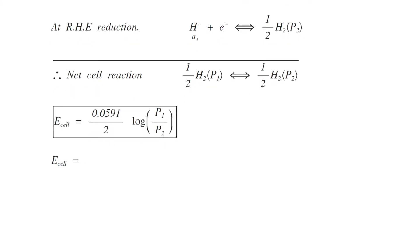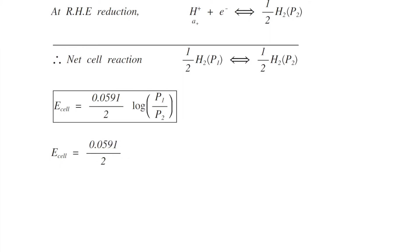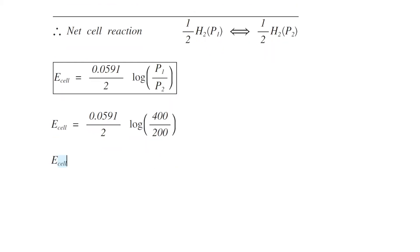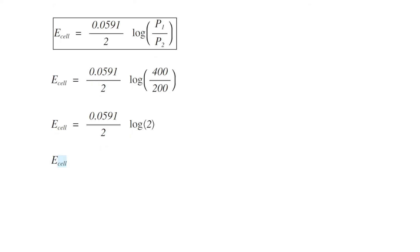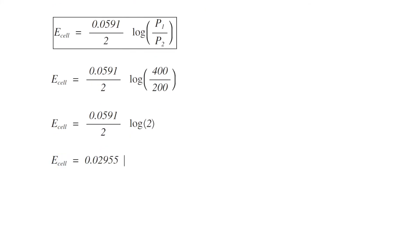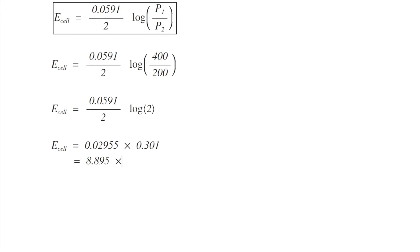Substituting the values: E_cell equals 0.0591/2 log of (400/200), which gives E_cell equals 0.02955 × 0.301, which comes to 8.895 × 10⁻³ volts. So we can easily calculate the EMF of the cell. If you like this video, please click the like button, and if you are new to the channel, please click subscribe and press the bell icon to receive the latest updates.